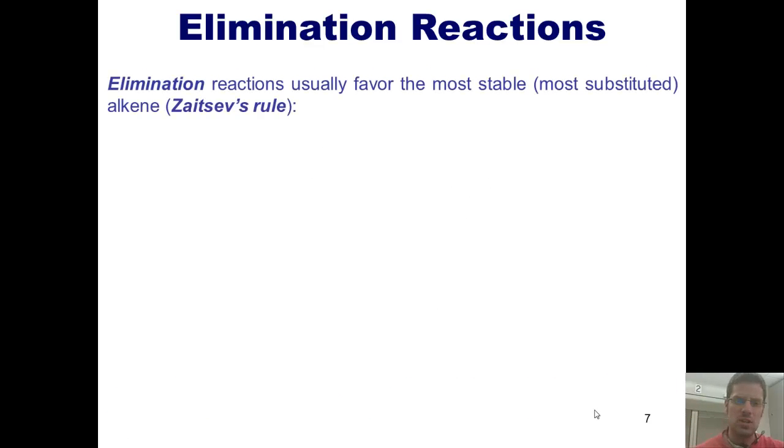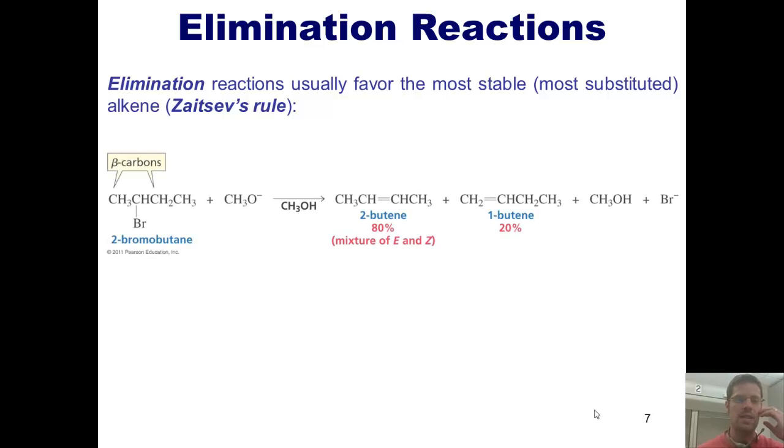So, elimination reactions usually favor the most stable, or most substituted, alkene, which you'll recognize from our previous chapter follows Zaitsef's rule. In this example, I could imagine this base, methoxide, grabbing a hydrogen here, and thrusting its electrons down to form a carbon-carbon double bond to the left of the bromine, or doing the same thing with the hydrogen to the right, forming a carbon-carbon double bond to the right.